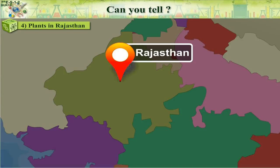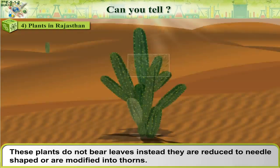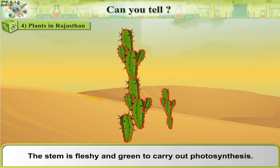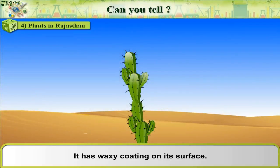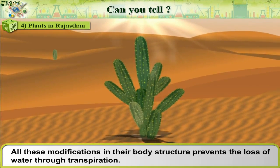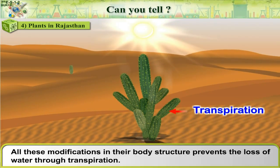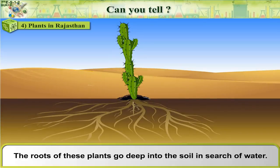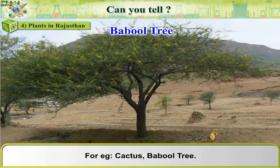Plants in Rajasthan: These plants do not bear leaves. Instead, they are reduced to needle-shaped or are modified into thorns. The stem is fleshy and green to carry out photosynthesis. It has a waxy coating on its surface. All these modifications prevent the loss of water through transpiration. The roots of these plants go deep into the soil in search of water. For example, cactus, baobab tree.